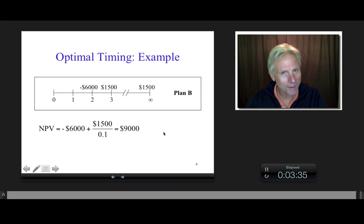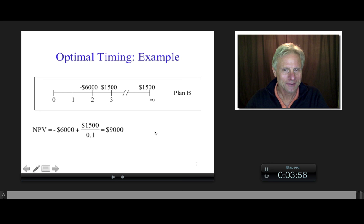So with plan A, I had 5,000. With plan B, I have 9,000. So does that mean that I do plan B with a higher NPV? I don't, right? Because why? Well, for what time period is this 9,000? Well, it's at time 2, right? We have this 6,000 at time 2, perpetuity, all of that is at time 2. And what about the 5,000 for plan A? That was at time 0, right? So how do we make an apples to apples comparison? I mean, can we compare a 9,000 at time 2 to a 5,000 at time 0? We can't, right?